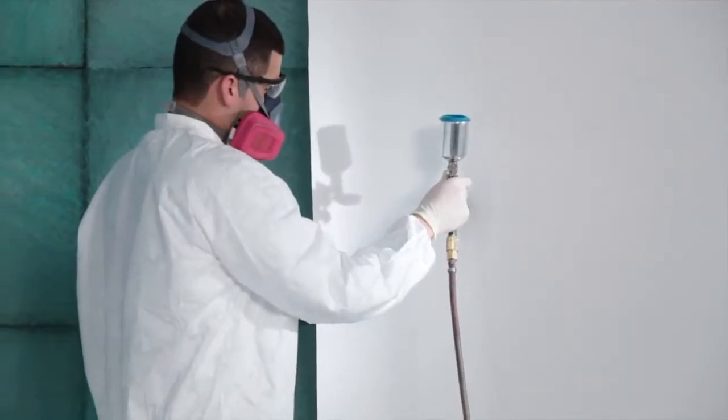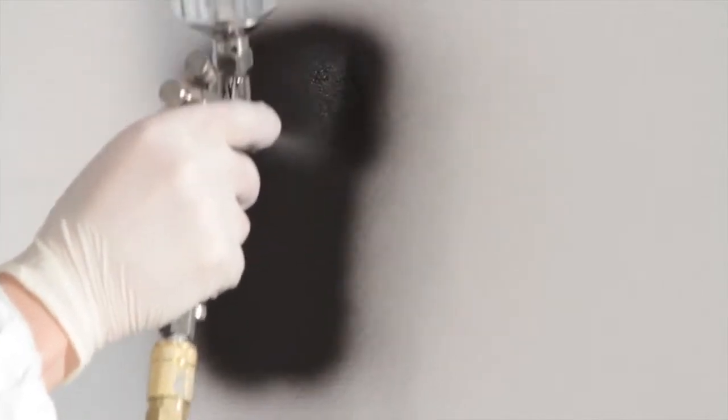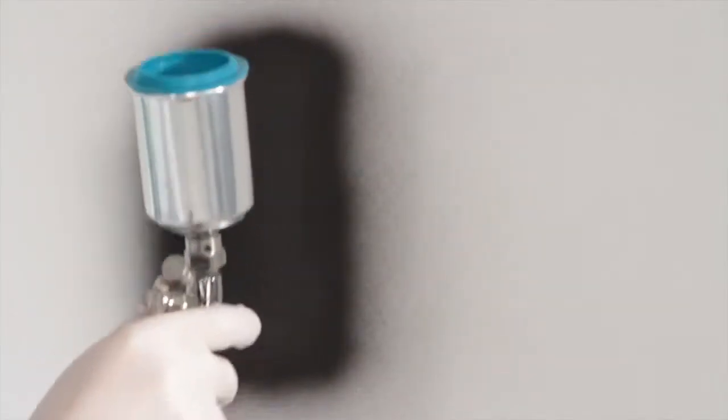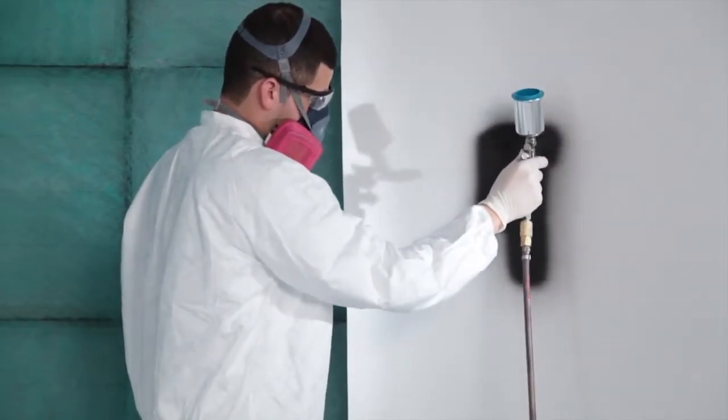Practice. Start spraying on a piece of white paper to adjust the spray pattern and practice your spraying technique. Spray with the gun 3 to 5 inches away from the paper and adjust the spray pattern to between 2 and 3 inches wide.